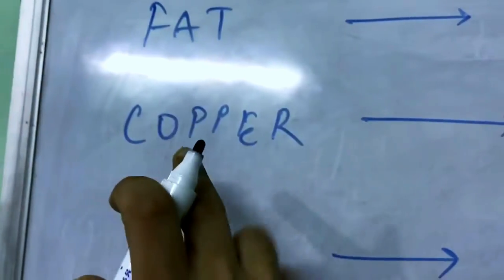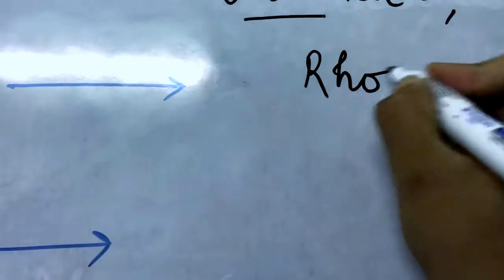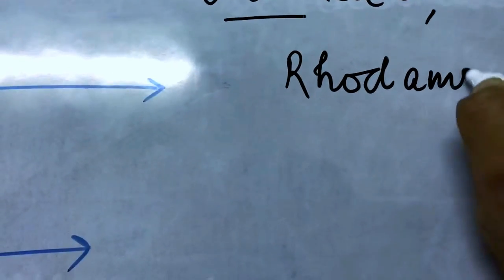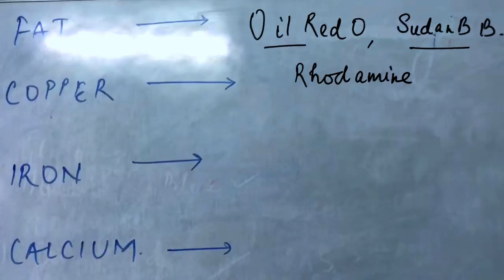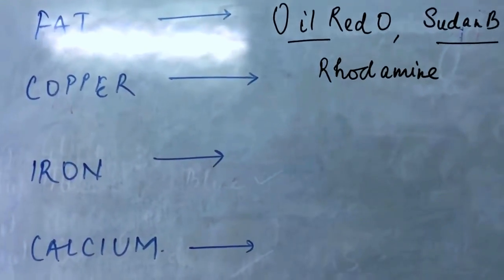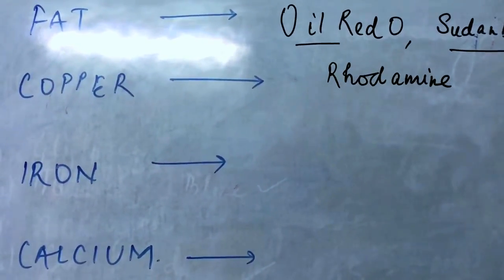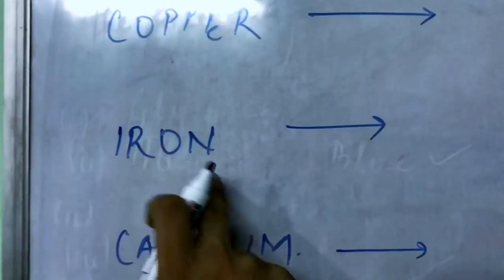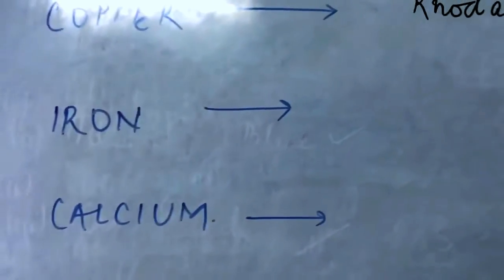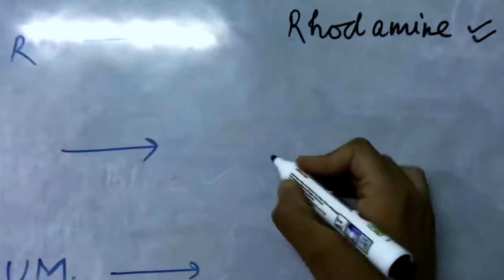Copper is stained using rhodanine. So, for example, if a question is being asked that a person has, let's say, Wilson's disease and the copper in the liver has to be stained, the answer will become rhodanine stain. Similarly, iron—let's say a person has hemochromatosis and the iron in the liver has to be stained—iron can easily be stained using Perl's Prussian blue.